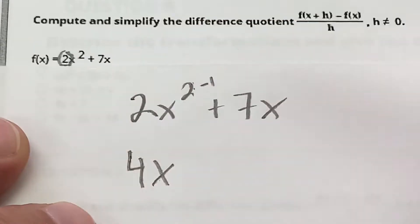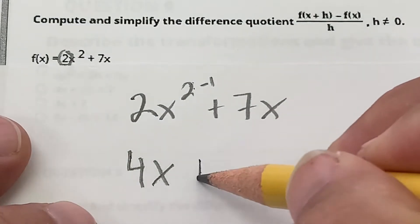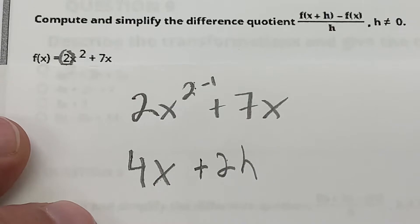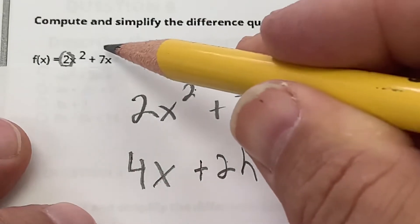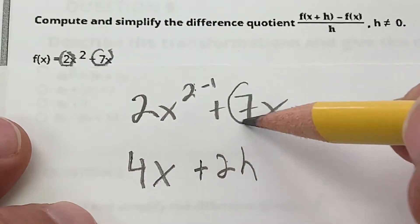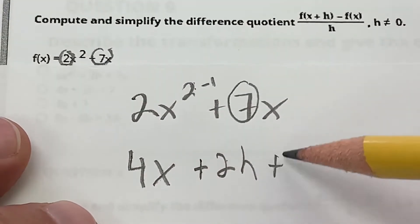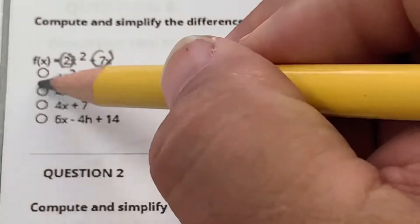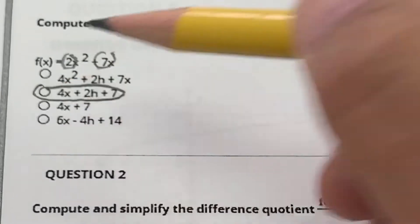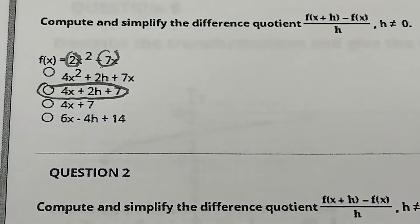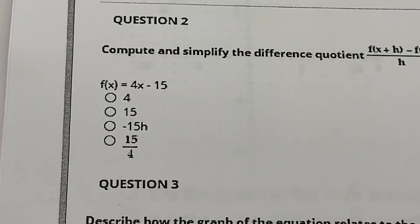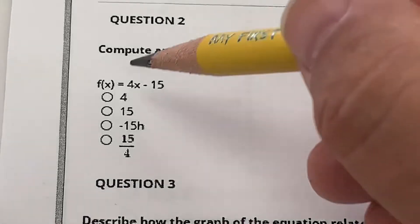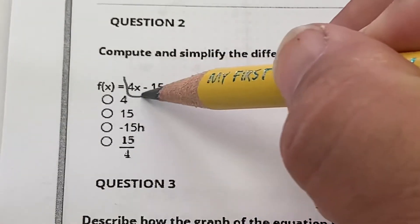The number in front of x² is 2, so that gives me plus 2h, and then the 7 just becomes plus 7. So the derivative is 4x + 2h + 7. For 4x minus 15, the difference quotient is basically just asking for the slope of that line, so the answer is just 4.